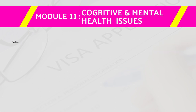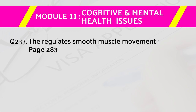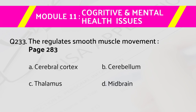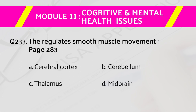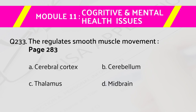Question number 233: The structure that regulates smooth muscle movement — page number 283. Answers are: a) cerebral cortex, b) cerebellum, c) thalamus, d) midbrain. The right answer is b) cerebellum.